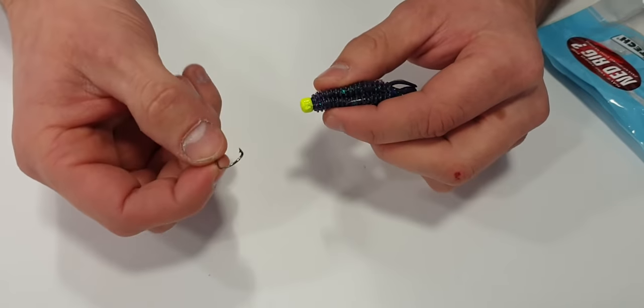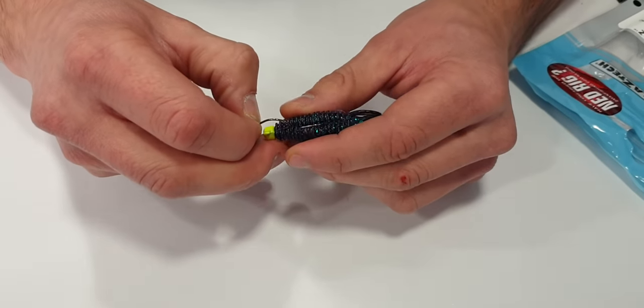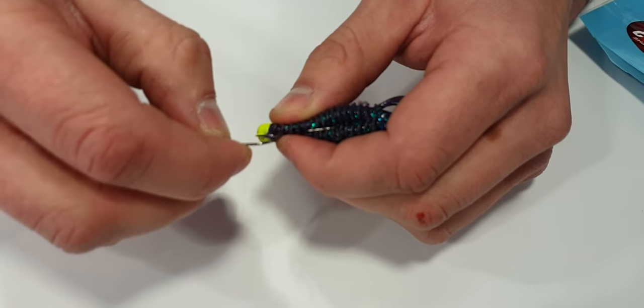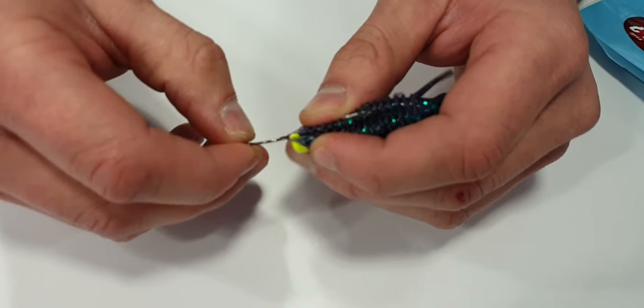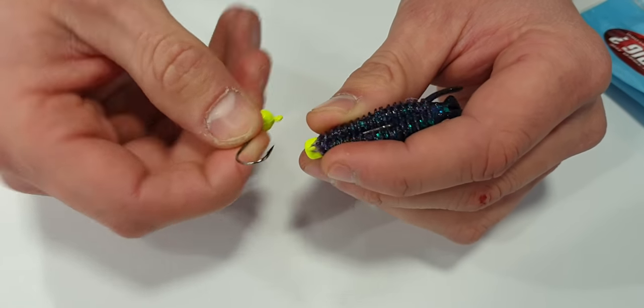Because the Elastec is so stretchy, you can simply, once it's on your jig head, take another hook and just nick it into the Elastec just in front of the eye and then you can simply stretch that piece over the eye of your hook, take that hook out of the way.